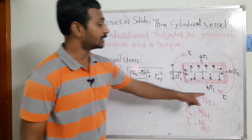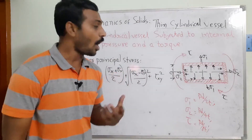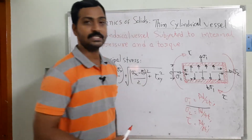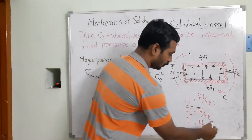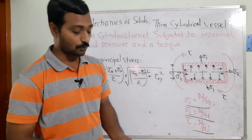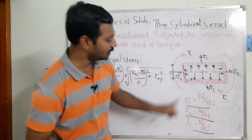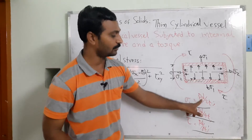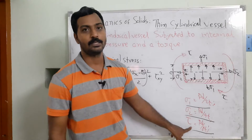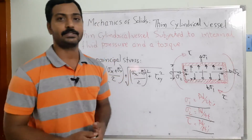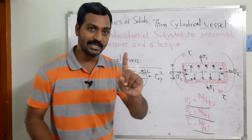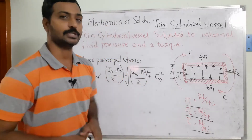To find the resultant, we cannot design the diameter separately for each stress. Instead, we combine all the stresses into one equation. We already have the governing equations for σ1 (circumferential) and σ2 (longitudinal), and we will substitute all of them together to find the principal stresses.